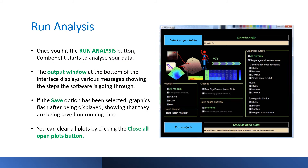Once you hit the Run Analysis button, ComBenefit starts to analyze your data. The output window at the bottom of the interface displays various messages showing the steps the software is going through. During the analysis, ComBenefit shows the graphics that have been selected by the user. If the Save option has been selected, graphics flash after being displayed, showing that they are being saved on running time. You can clear all plots by clicking the Close All Open Plots button.